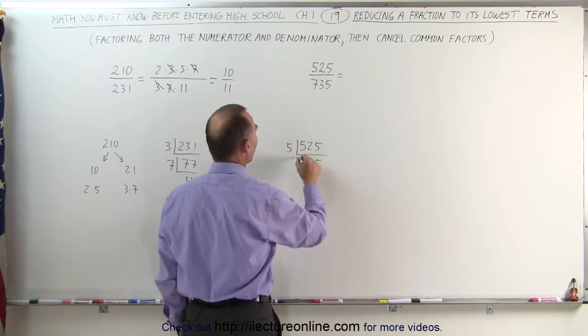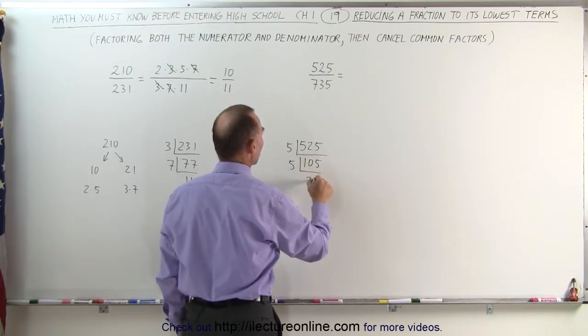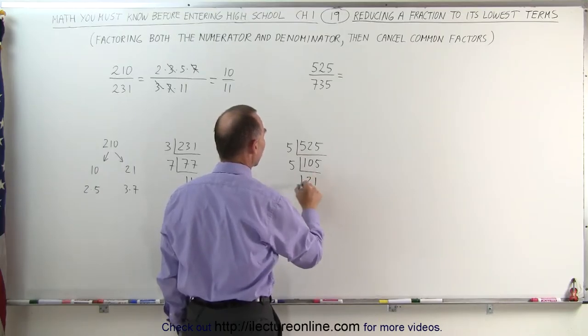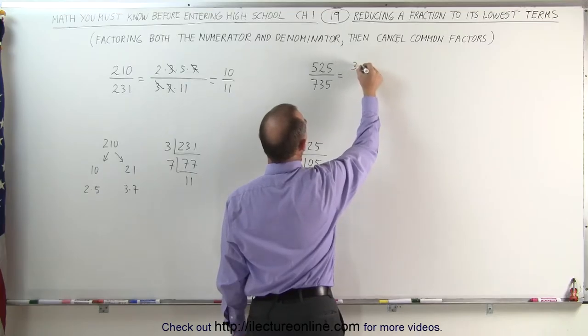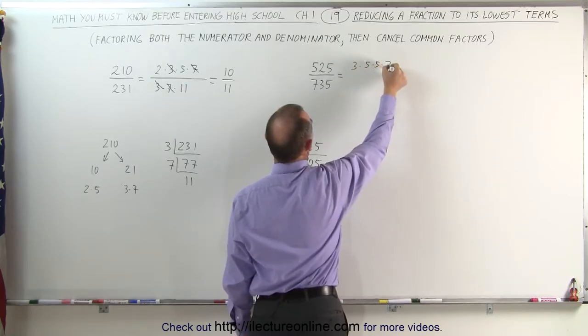This can still be divided by 5. 5 goes into 105, 21 times, and 21 can be divided by 3, which gives us 7, which means that 525 can be written as 3 times 5 times 5 times 7.